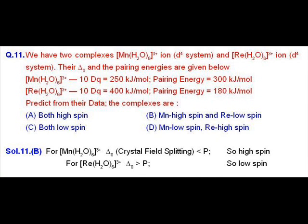We are provided with two complex compounds and we see that in option B, we are finding that the complex of manganese is high spin and that of rhenium is of low spin.